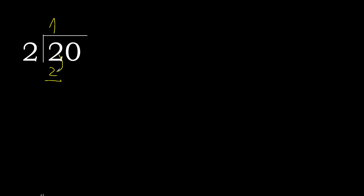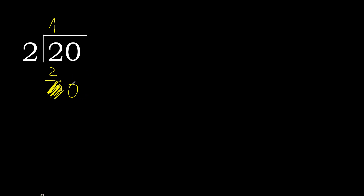That is not greater. 2 minus 2 is 0. Next, eliminate 0 on this side. 0 is less, therefore next — that is not a number, therefore finish it. Complete 0, because finish it with 0.